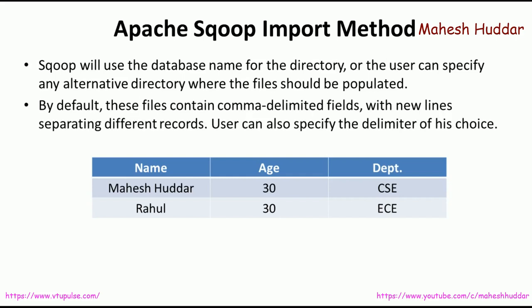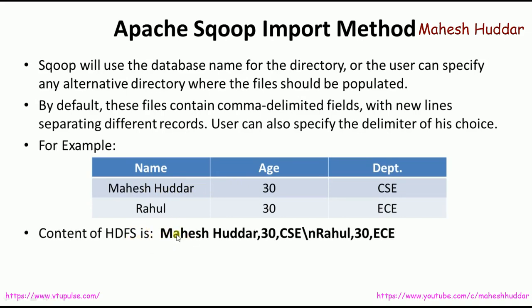By default, the data imported from RDBMS will be written into a text file separated by commas. Each field is separated by a comma and each record is separated by a new line. For example, if a database has three attributes and two rows, once imported into HDFS, the first and second fields are separated by commas and the two records are separated by a new line. The user can also specify a delimiter of their own choice — for example, a semicolon instead of a comma, or a tab instead of a new line.